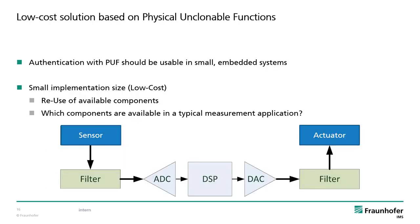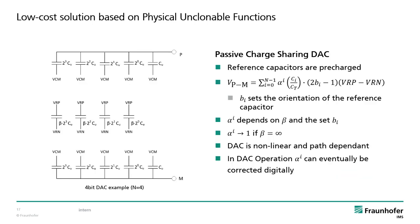We want to perform authentication in small embedded systems with the help of PUFs. These systems are usually designed with low-cost devices, and therefore the overhead for the PUF should have a small implementation size. The idea is to take components which are already present in the integrated circuit and reuse them for the PUF application. We are considering a typical measurement application where you have some sensor and actuator but also analog and digital signal processing. Between the analog and the digital world, we always use some kind of analog-to-digital or digital-to-analog converters, which are often constructed as an array and therefore offer many individual components to be used as a random source.